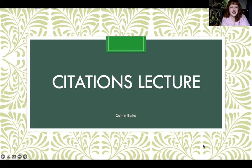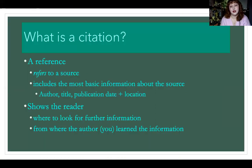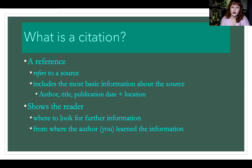So, citations. What is a citation? A citation is a reference — to cite something is to refer to its source. The citation also includes the most basic information about that source: who wrote it, what it's called, when it was made, and where it is located — either where it was published if it's a physical item, or what the URL is if it's online. A reference is used to show the reader where to look for further information and also to back up your claims, to support those claims and show that you're not just making things up. People can then go and check where you got those facts from and learn more.